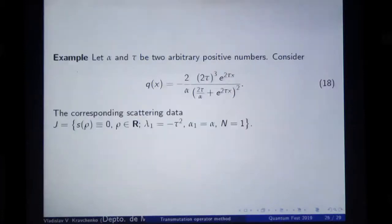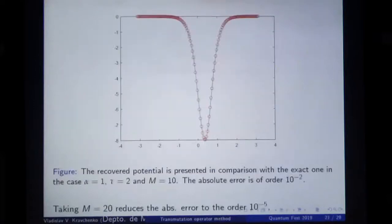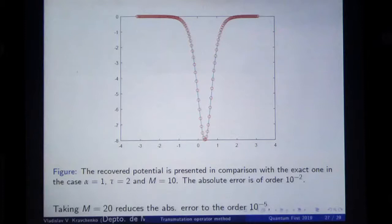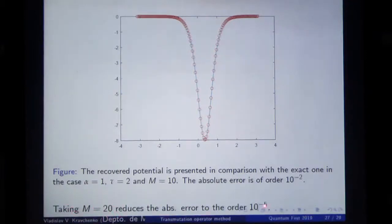For example, Q in this case is just this potential. Everything can be done explicitly, so it is a good example. Here is how it looks numerically: the circles are the recovered potential and the blue line is the exact potential. The absolute error of the recovered potential is 10 to minus 2 with just 10 equations. When we take 20 equations in the system, the order of the absolute error is already 10 to minus 5. It works in seconds.